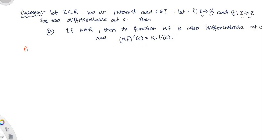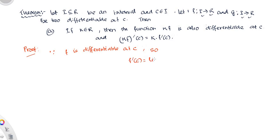Let's look at the proof. Since f is differentiable — the function f is differentiable at the point c — what does differentiable mean? A limit exists. The limit as x approaches c of f(x) minus f(c) divided by x minus c exists. That means the left-hand derivative equals the right-hand derivative.